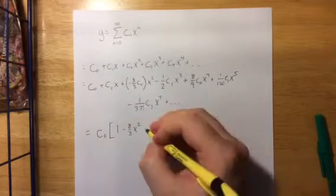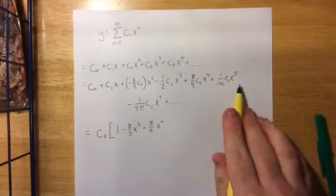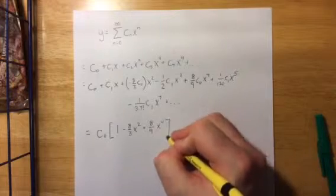And we also have one right here, +8/9 x⁴, and then there was nothing else that had a c₀ after that.